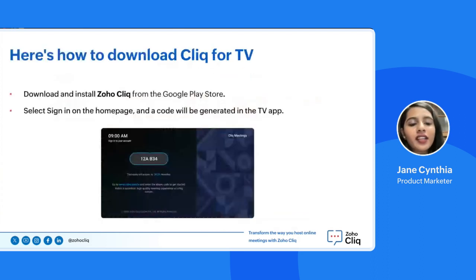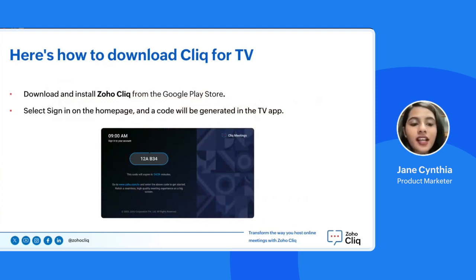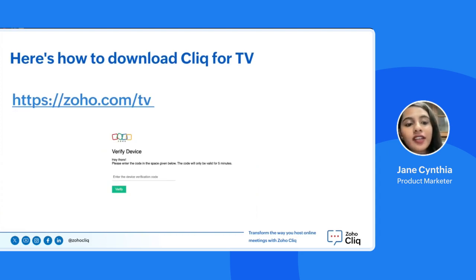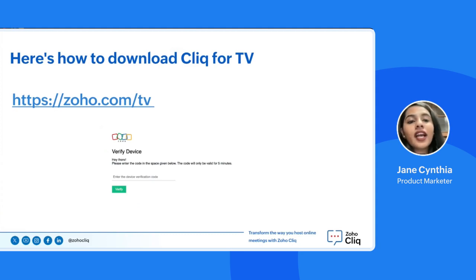To download Click4TV right away, follow these simple steps. Turn on your TV, go to the Play Store on your Android TV, and search for ZohoClick. Download and install the app and select the sign-in button on the home page — a code will be generated in the TV app. Make a quick note of the code generated, then grab your laptop or mobile phone and go to the URL displayed on your screen. Log in using your Zoho credentials, enter the code flashing on your TV screen into your laptop or mobile, and click verify. You will now be able to see ongoing and upcoming meetings on your TV screen and can select join meeting to attend all your upcoming meetings from the Click4TV app.